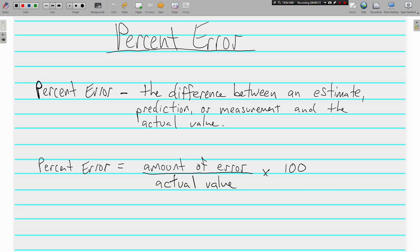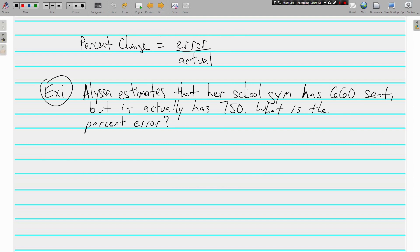Percent Error is the amount of error divided by the actual value times 100. Let's look at some examples. Example number one. Looks like Alyssa estimates that her school gym has 660 seats, but it actually has 750. What is the Percent Error?